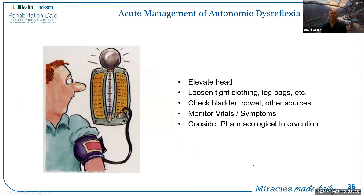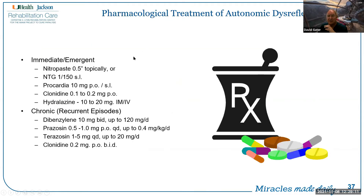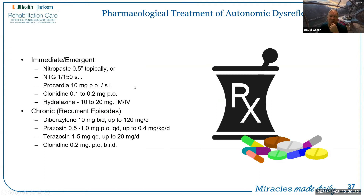For acute management of autonomic dysreflexia: elevate the head, loosen tight clothing and leg bags, check the bladder first and then the bowel, then look for other sources. Monitor vitals approximately every one to two minutes and symptoms during this time. Consider pharmacological intervention if you can't find a source, or if you found a source you can't immediately correct. Quick-set orders: if the blood pressure is greater than 120 over 80, or 20 mmHg above baseline, first check the Foley, check the bowel, and loosen restrictive clothing.